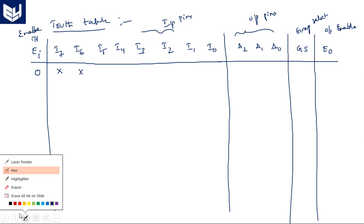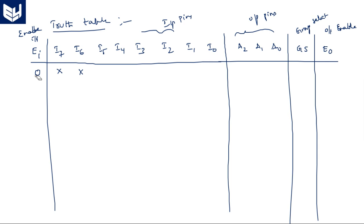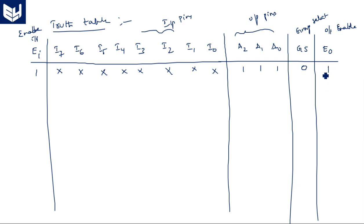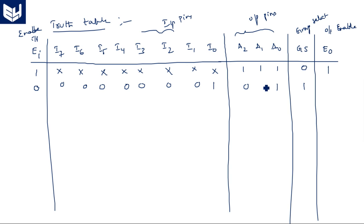Active-low means a value of one indicates the chip is disabled. When disabled, all outputs are one (deactivated). Group select is also activated in this state and enable output is one because the chip is deactivated. When enable input is activated and the least significant bit I0 is active, the output is 0-0-1, and group select is deactivated.